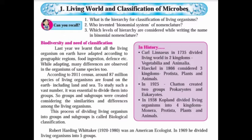This process of dividing living organisms into groups and subgroups is called biological classification. Robert Harding Whittaker (1920–1980) was an American ecologist. In 1969, he divided living organisms into five kingdoms, which we are going to discuss in detail.